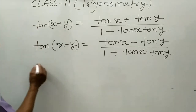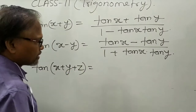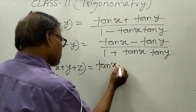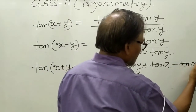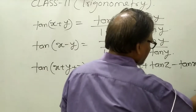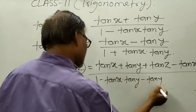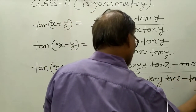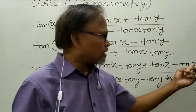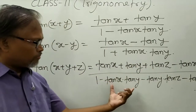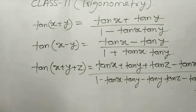One more formula — this is an extension to three angles: tan(x + y + z) equals (tan x + tan y + tan z − tan x · tan y · tan z) whole upon (1 − tan x · tan y − tan y · tan z − tan z · tan x). This is the formula for tan(x + y + z).